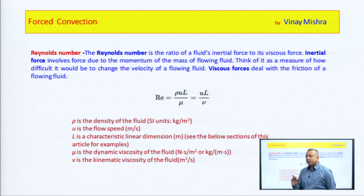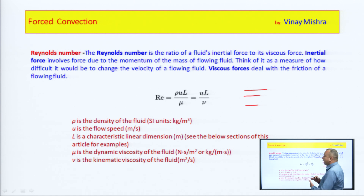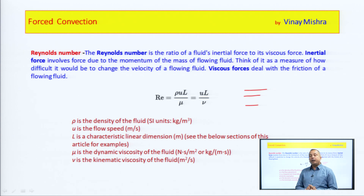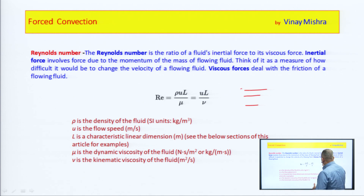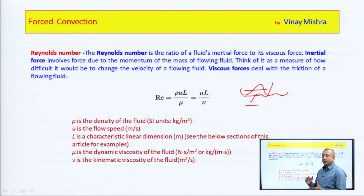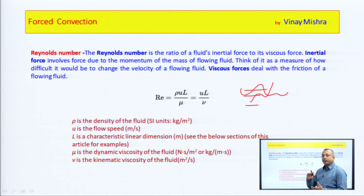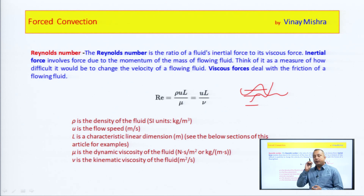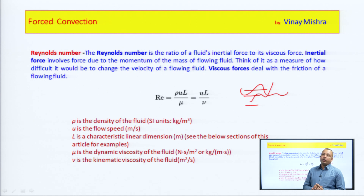Laminar flow is a streamline flow where disturbance does not affect the streamlines. If we talk about turbulent flow, there is high velocity and disturbance, with fluid particles moving in a zigzag random motion. Laminar flow is where fluid particles move in a definite direction in definite position layers — it is called laminar flow.